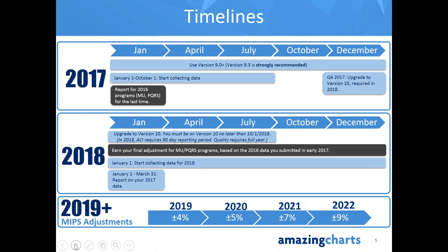This webinar series has been focused on the 2017 reporting period — the actionable period that will impact your score. The MIPS program began January 1st, 2017, and the length of the reporting period is determined by the participation level you choose. Considering the current political climate and CMS and ONC's lack of clarity on what comes after 2017, the requirements for 2018 are really undetermined. CMS has stated they expect to provide more information later this year. So let's remain totally focused on what you need to do now in 2017.